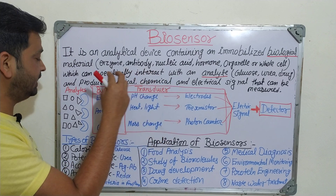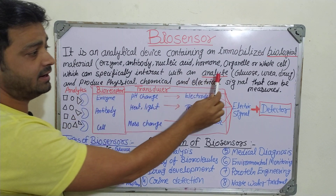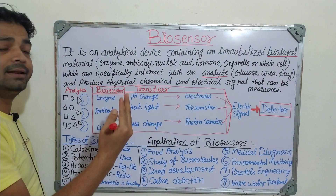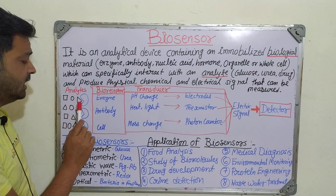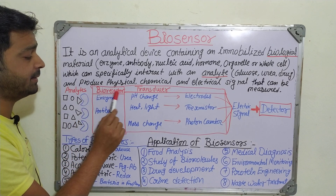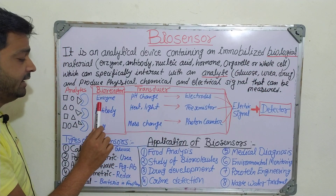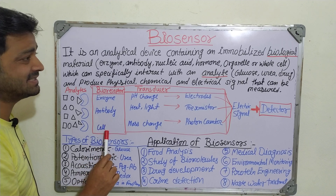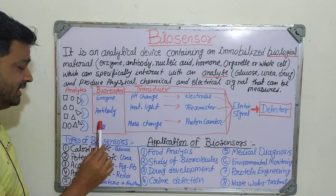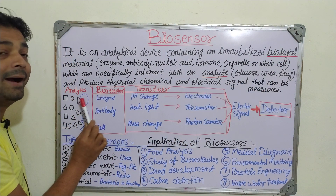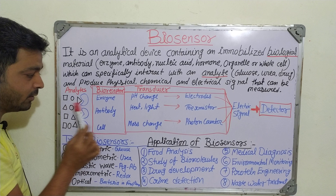Now let us understand how a biosensor works using a schematic diagram. The analyte — which could be glucose, urea, a drug, or any other substance — comes in different shapes and sizes. It interacts with a bioreceptor, which is the biological material — it may be an enzyme, antibody, nucleic acid, hormone, or whole cell. The analyte binds to the biological material.